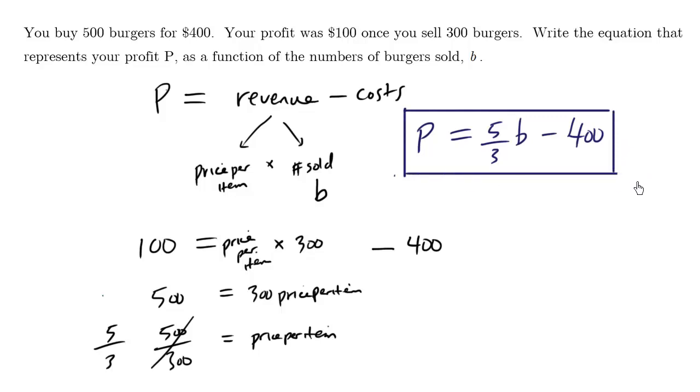Let's just test this out to see if it works. The original question says we make a profit of 100 once we sell 300 burgers. So P equals 5 over 3 times 300 minus 400. Is this true? 300 divided by 3 is 100, 100 times 5 is 500, 500 minus 400 indeed is 100. So the profit here is 100, and it seems that our equation is correct.